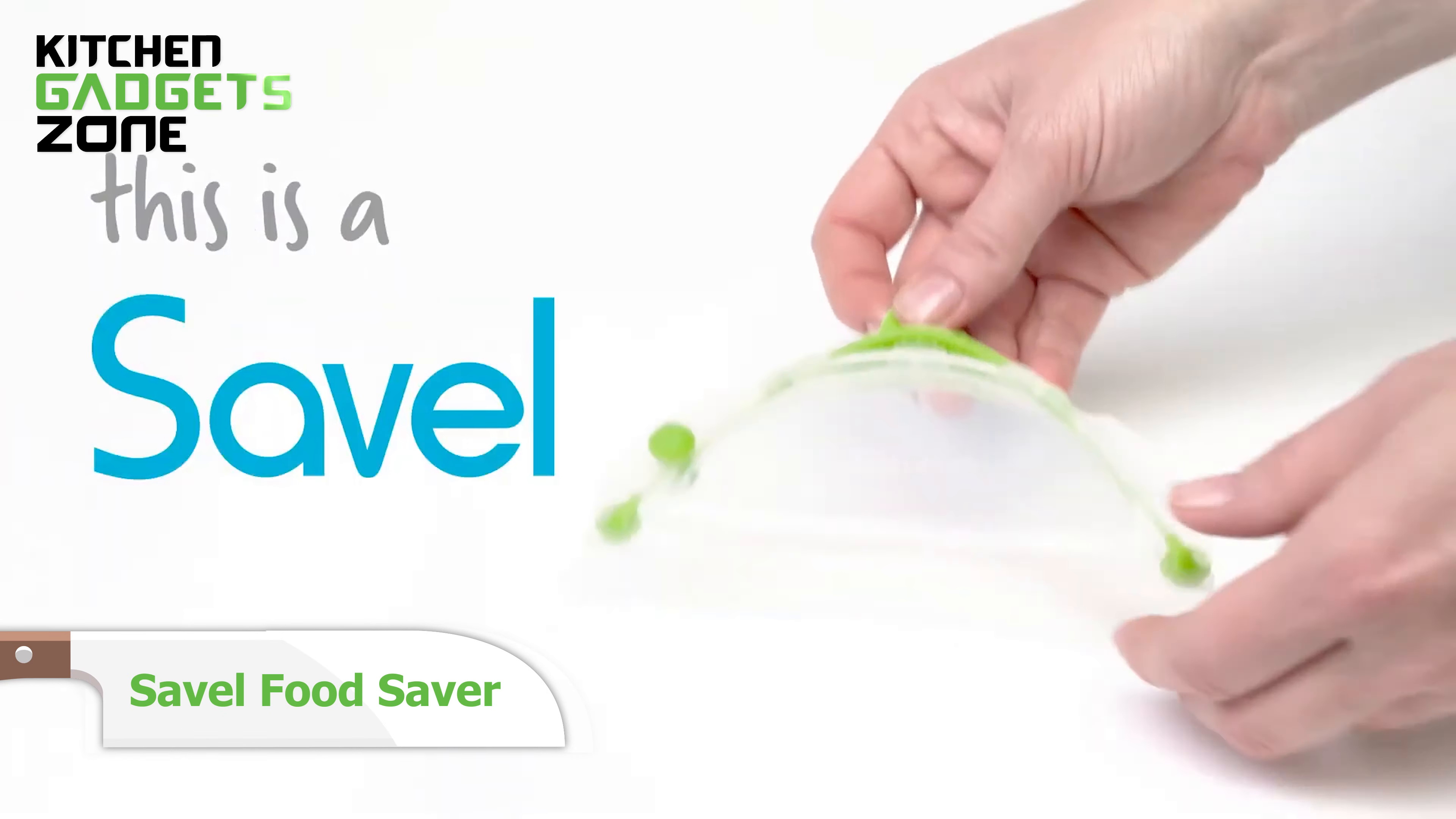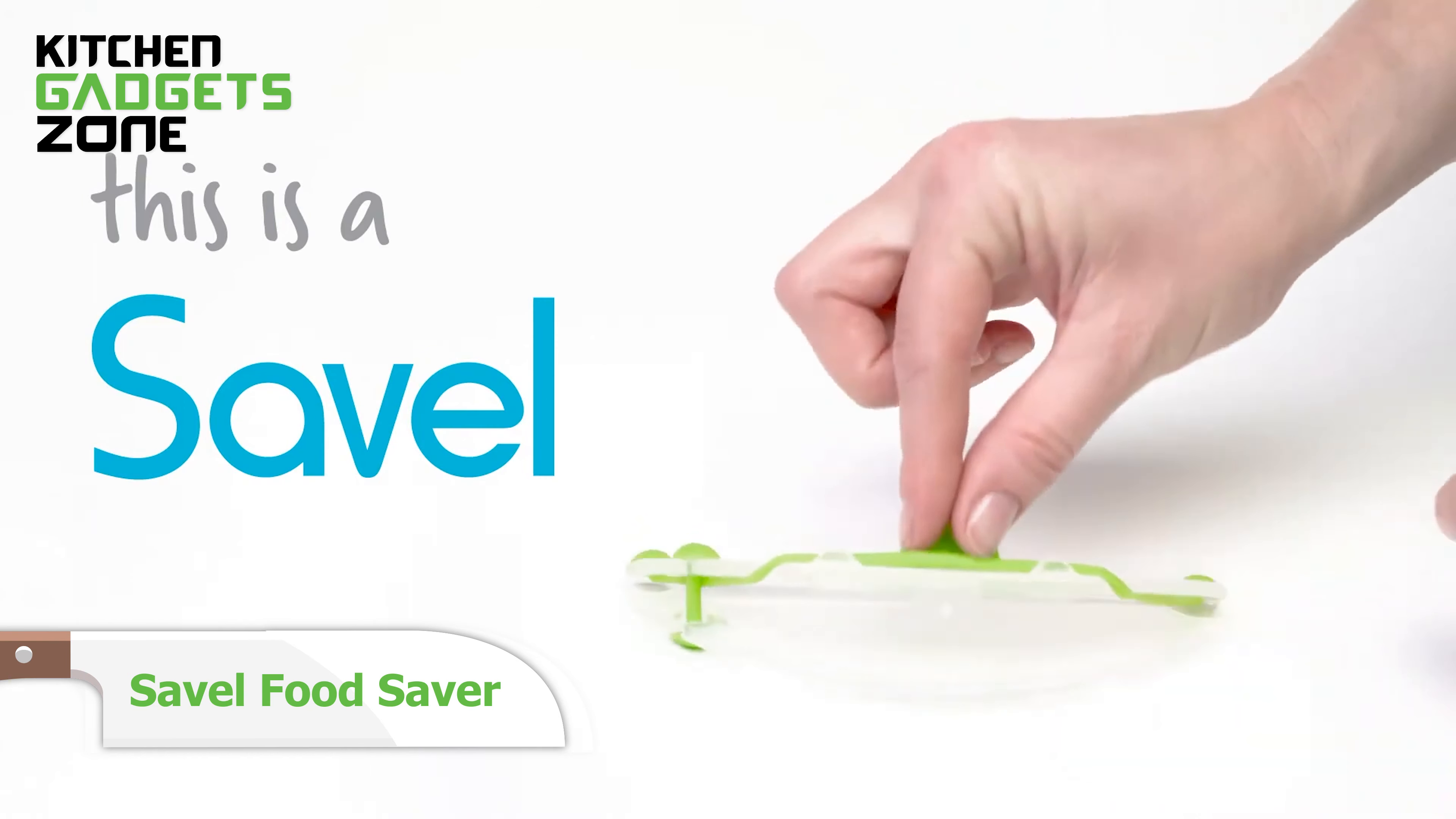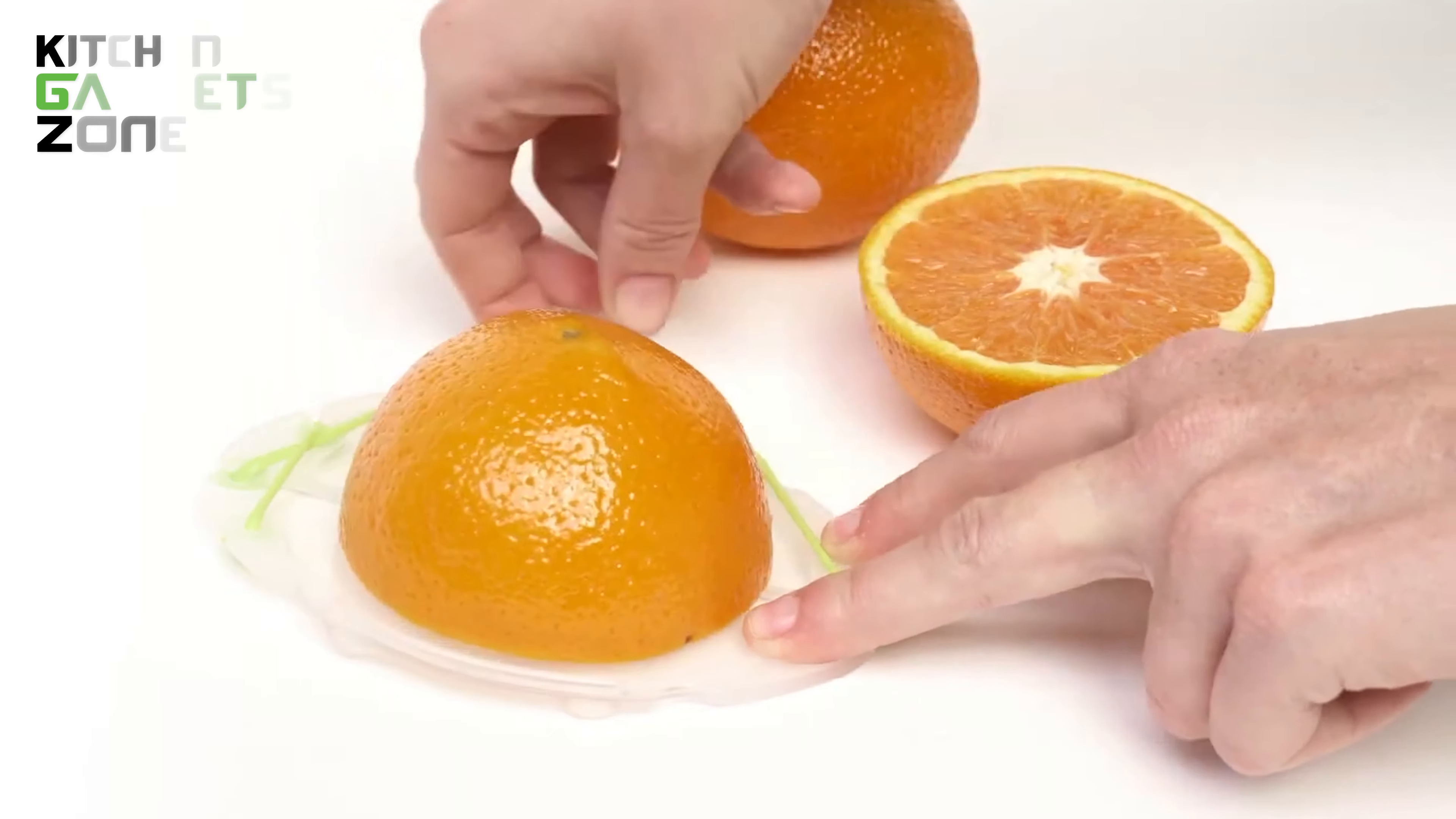Don't let those leftovers go to waste. The Saville Food Saver is here to keep your cut fruits, veggies, and more fresh for up to a week. Whether you've got half an avocado left, a wedge of lemon, or the last slice of lime, the flexible Saville has you covered.